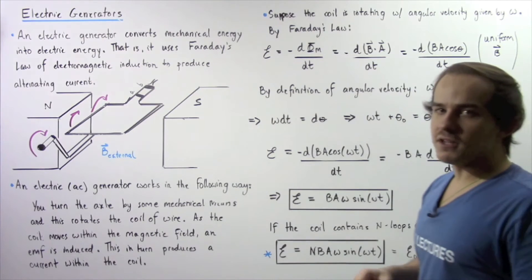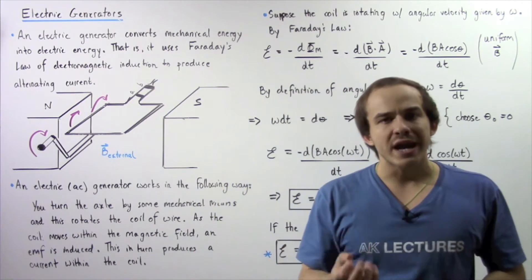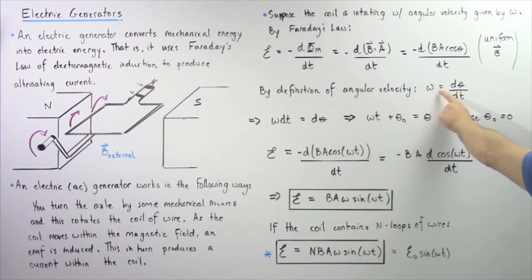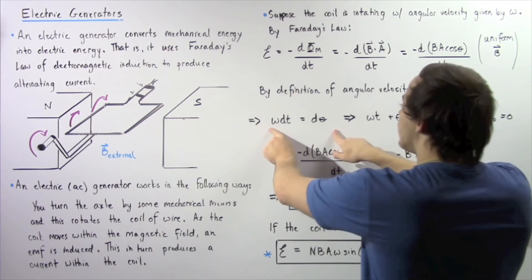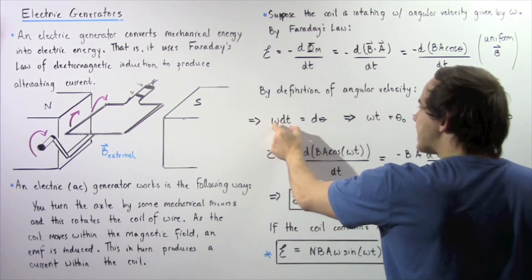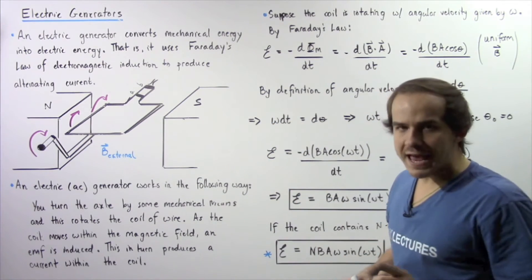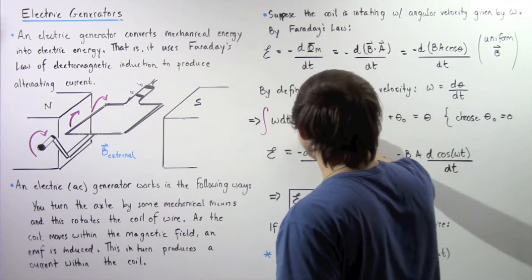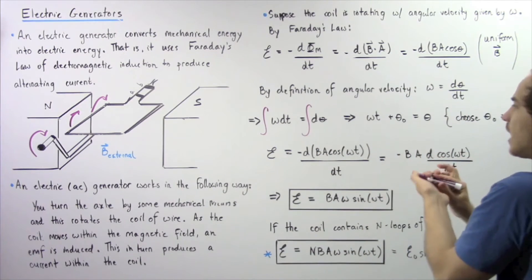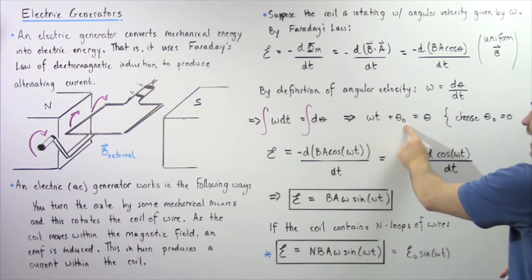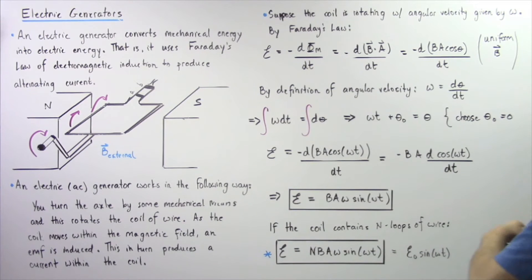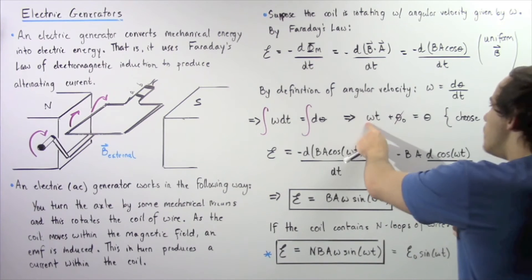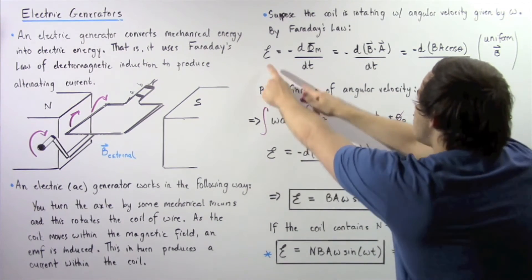By definition, angular velocity omega equals the rate of change of angular displacement with respect to time, so omega = dθ/dt. Rearranging, omega·dt = dθ. Integrating both sides gives omega·t + θ₀ = θ. Choosing θ₀ = zero, we are simply left with θ = omega·t.